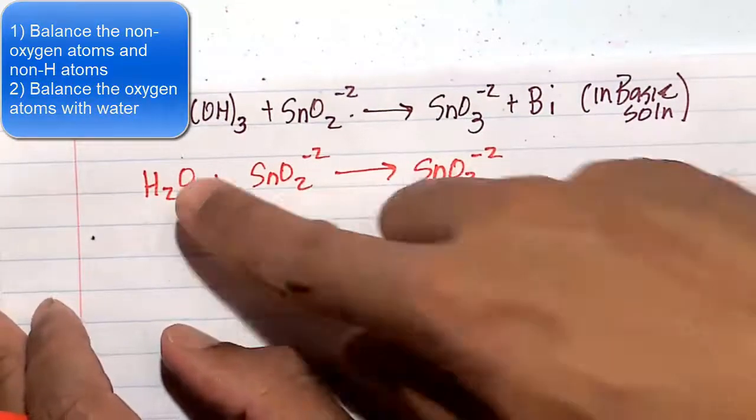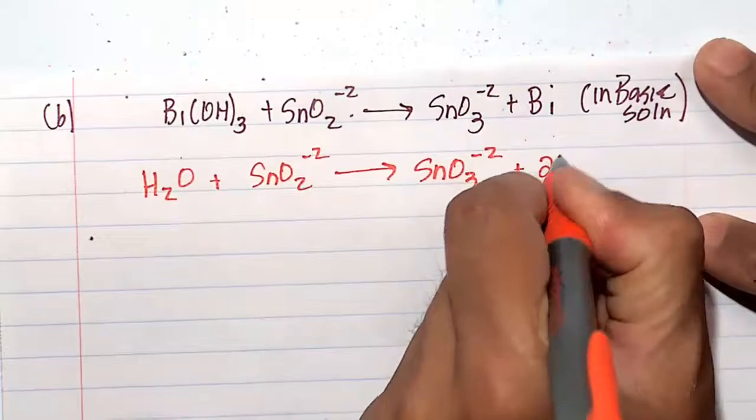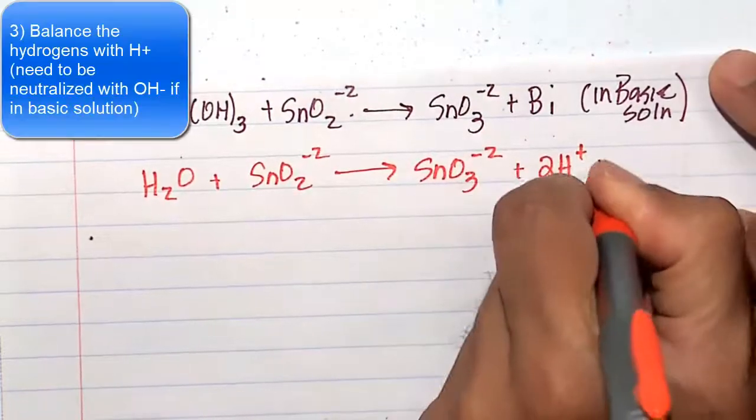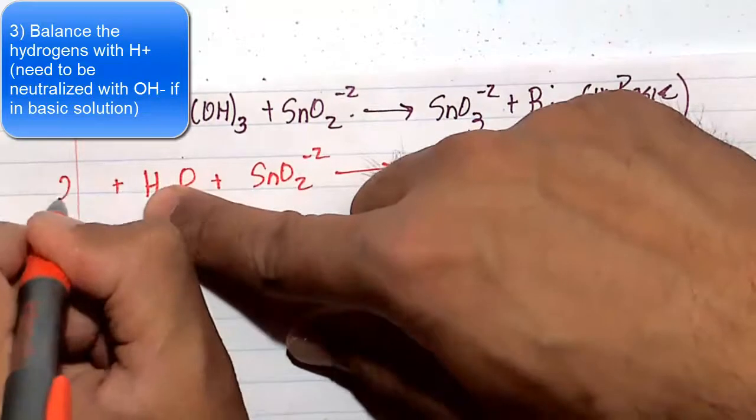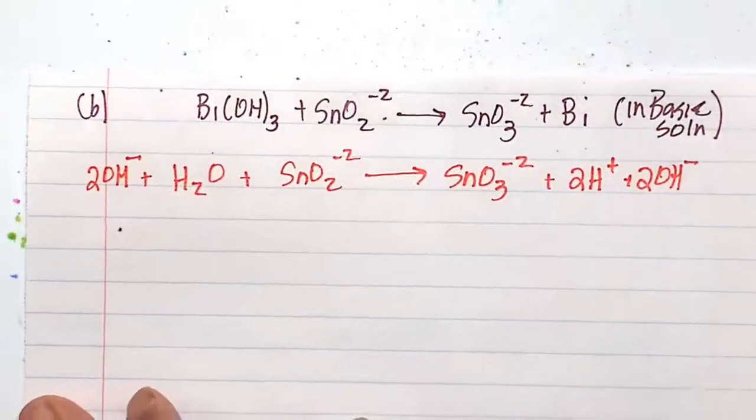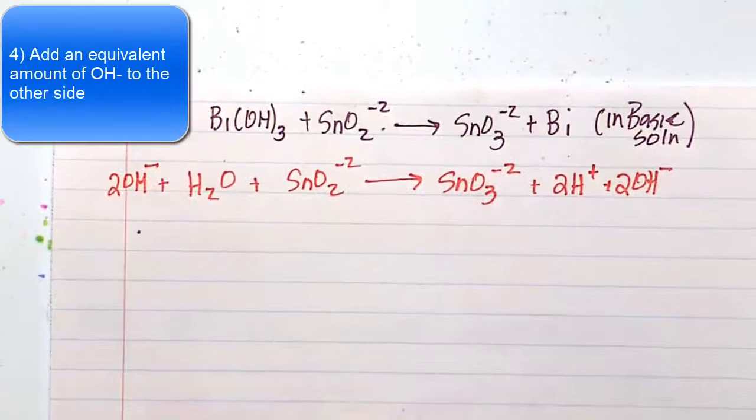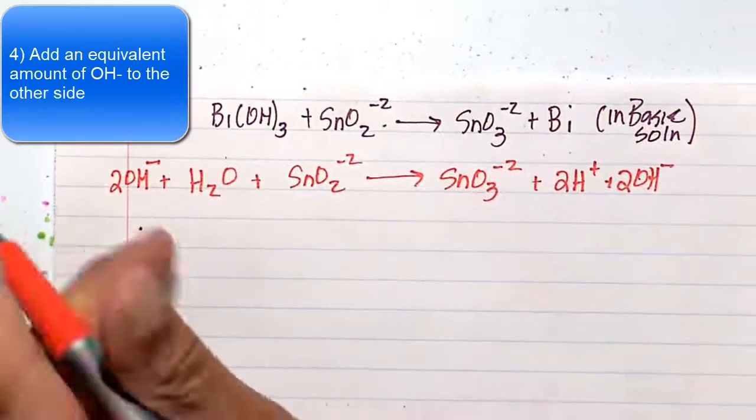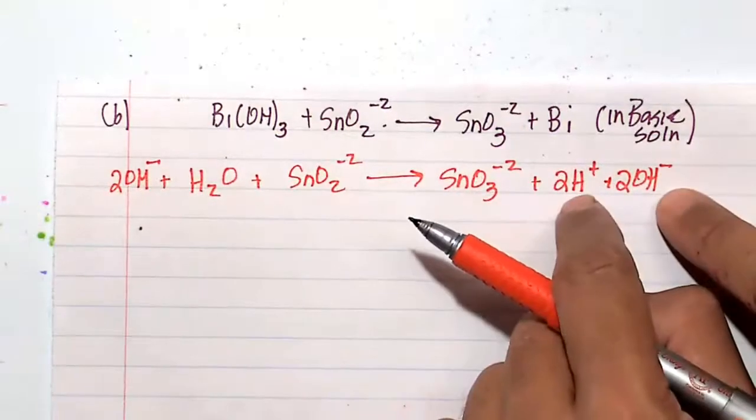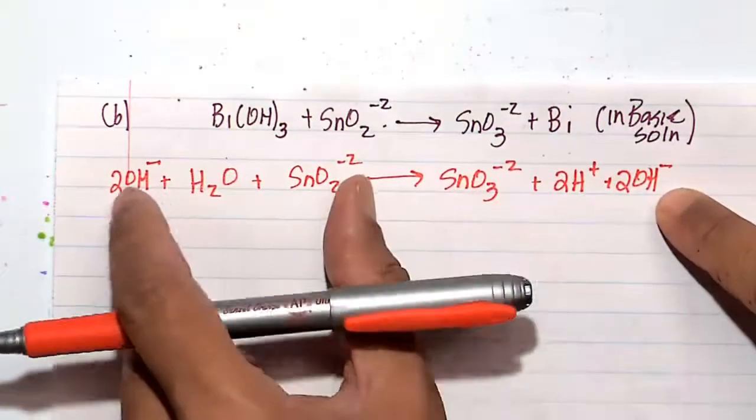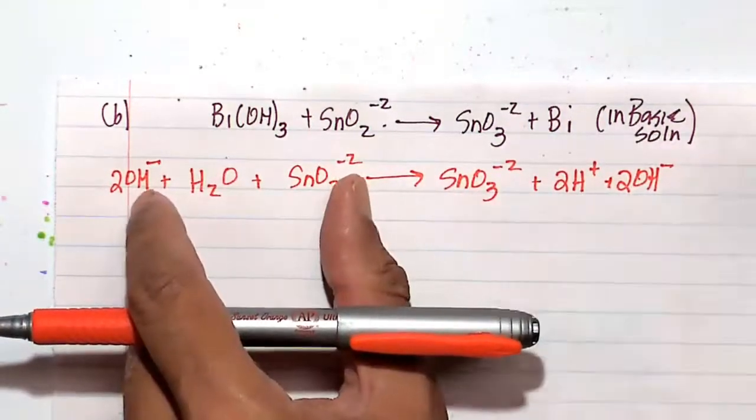I'm going to balance the hydrogens with 2H plus. Realizing we're in base, I'm going to neutralize that with an equivalent amount of OH minus. And now it's just a matter of balancing the electrons in terms of the charge. So minus 2, minus 2 is minus 4. These guys cancel each other out. So we have a minus 4 here and a minus 2 here.